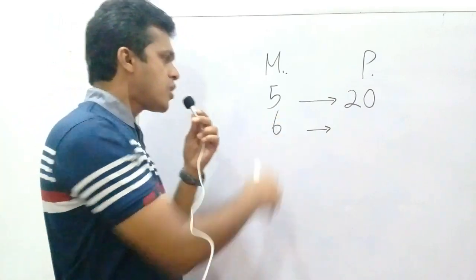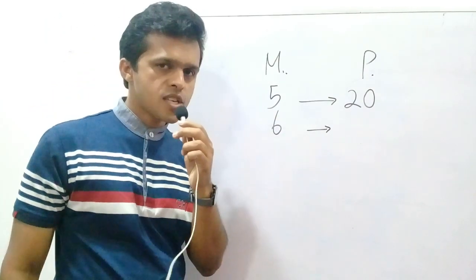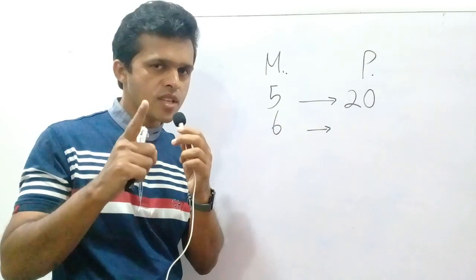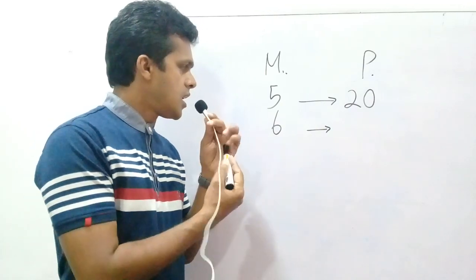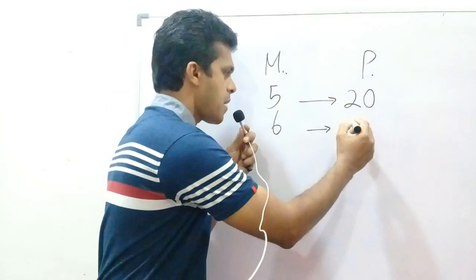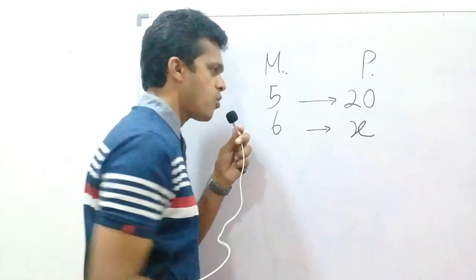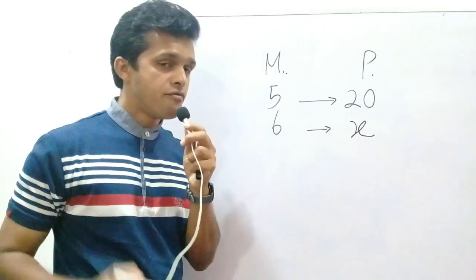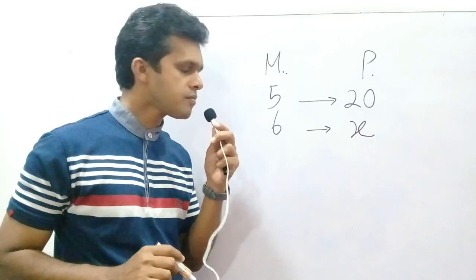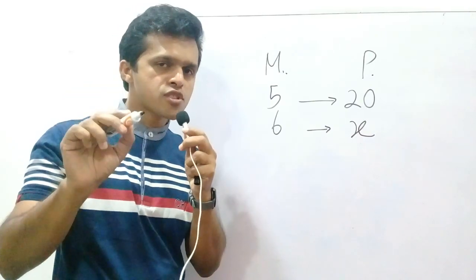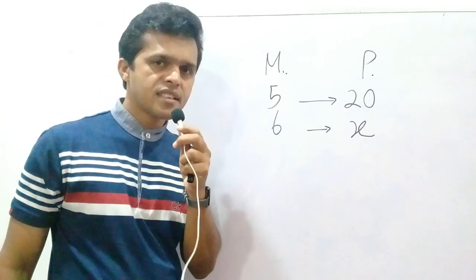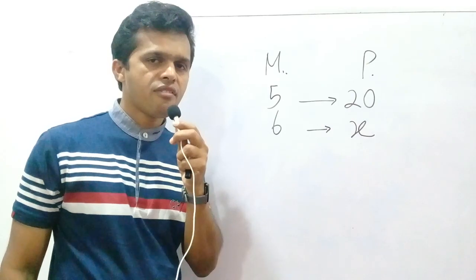Five mangoes can be bought for 20 rupees and six mangoes can be bought for 24 rupees. Here I am going to write that six mangoes can be bought for x rupees. We know the value of x is 24 rupees. Using the knowledge of equations we can find the value of x.